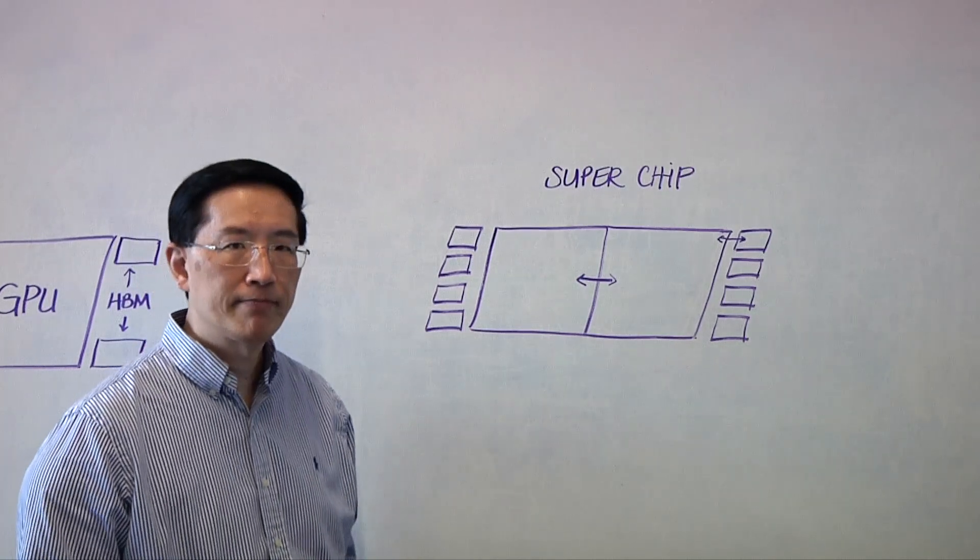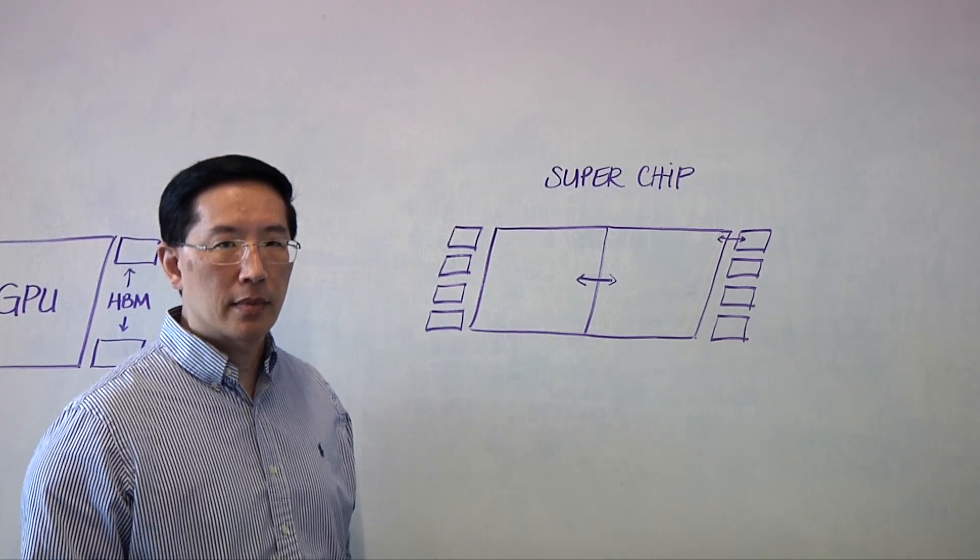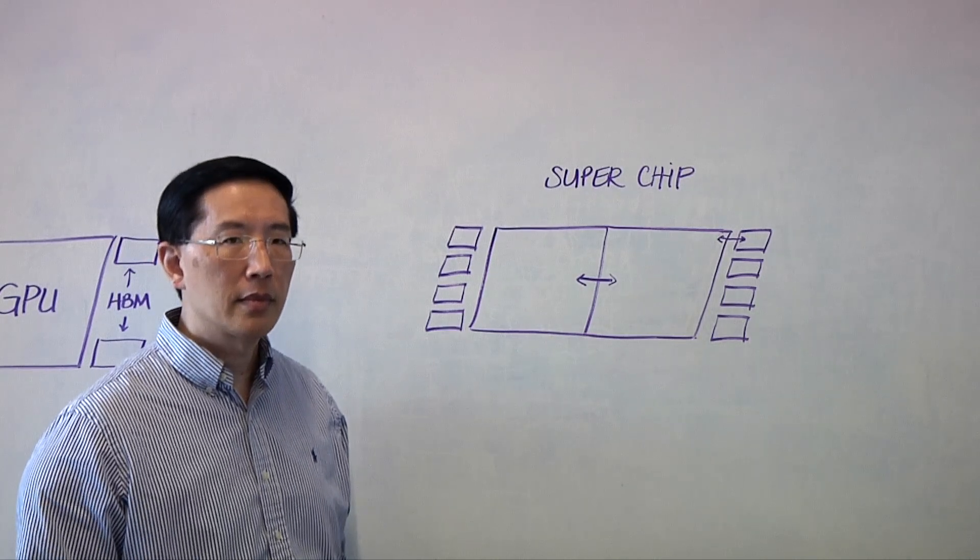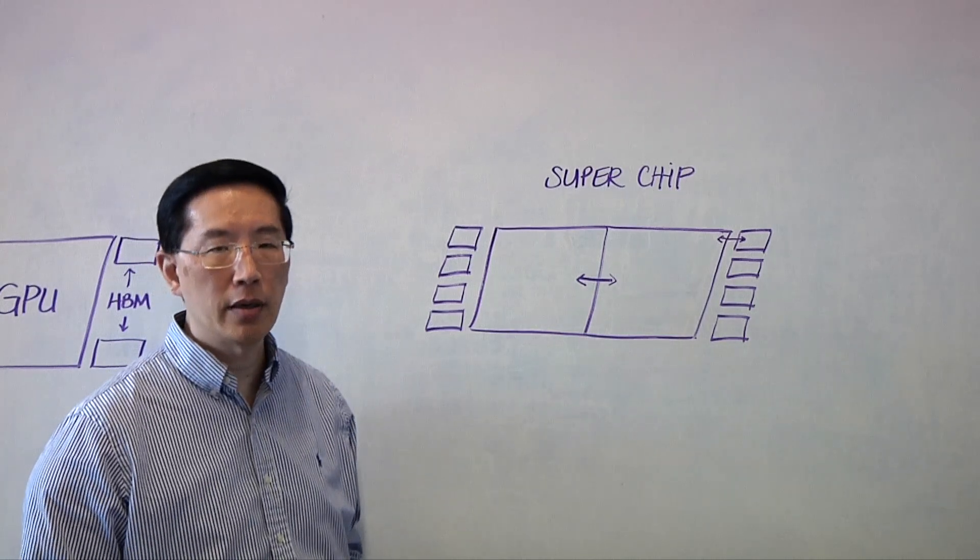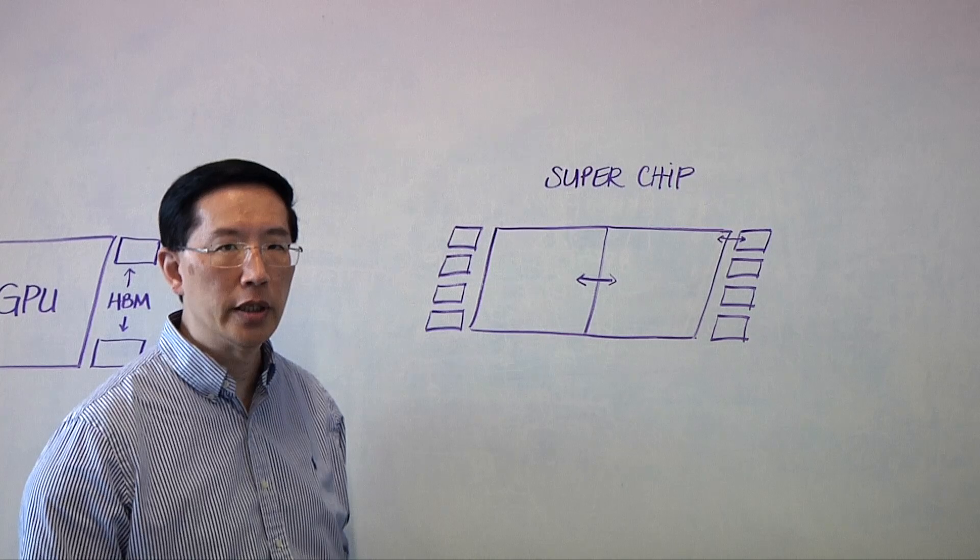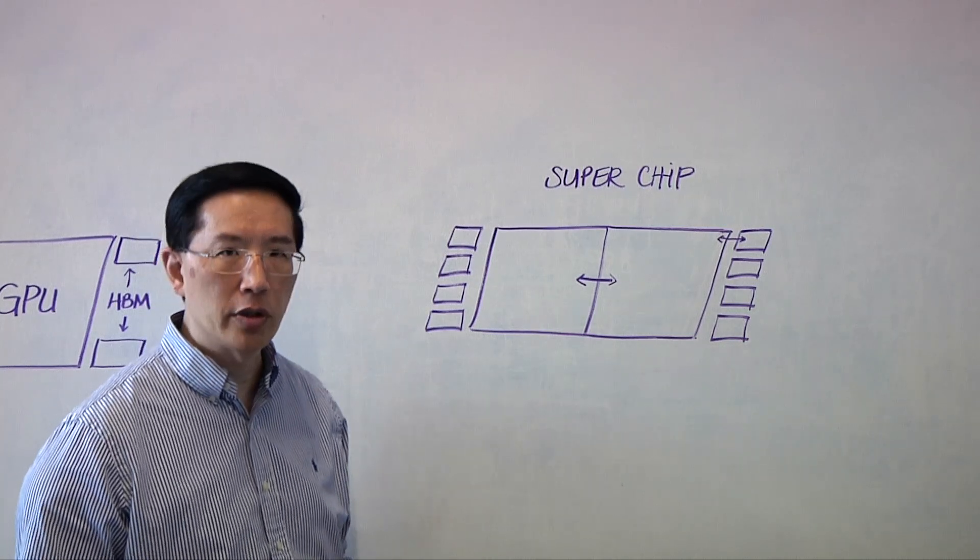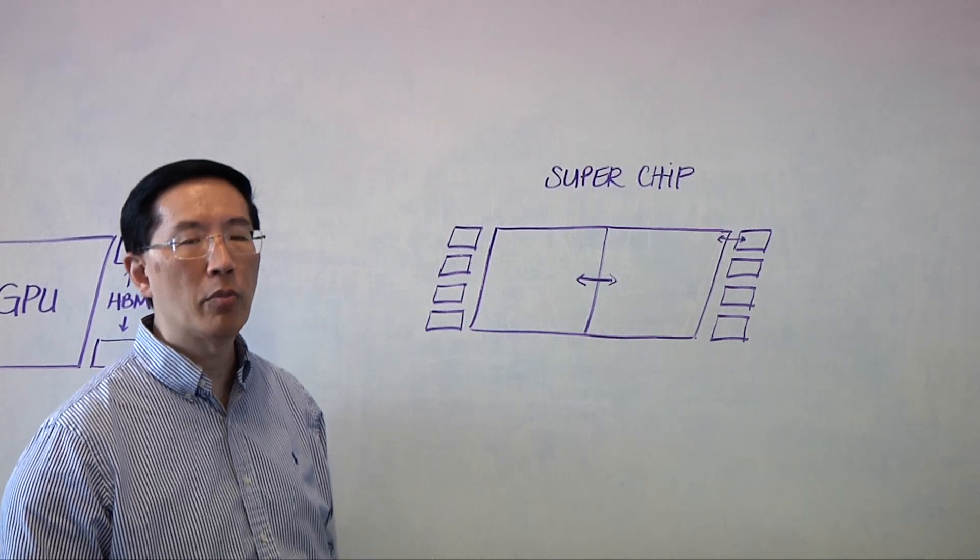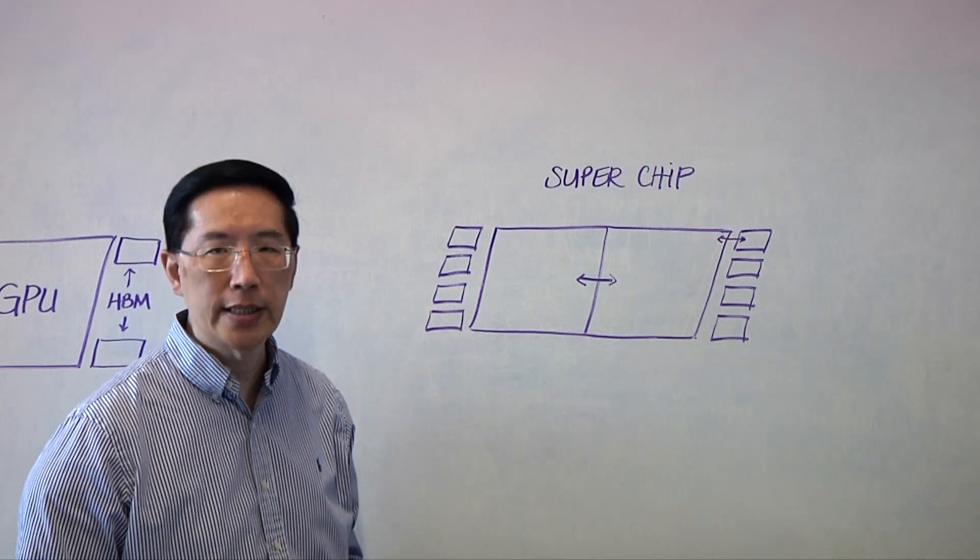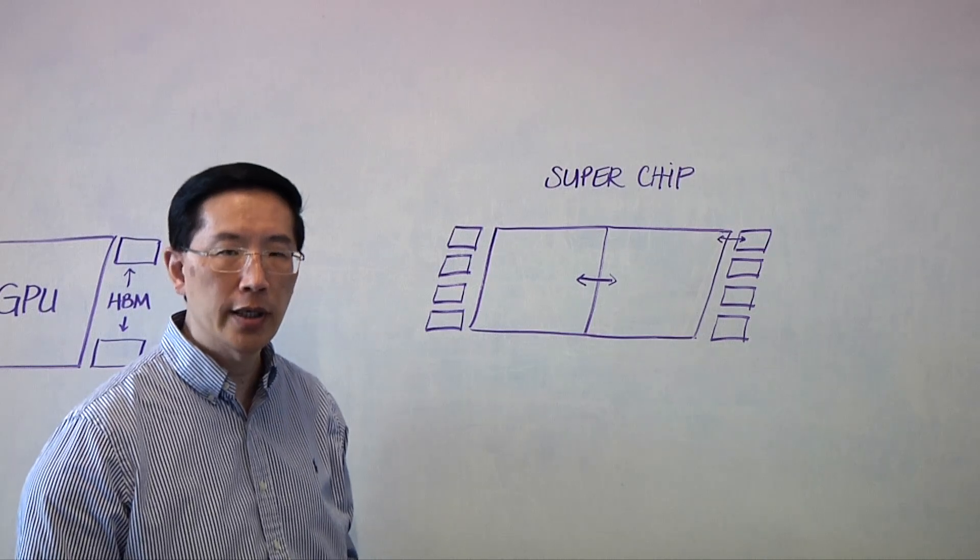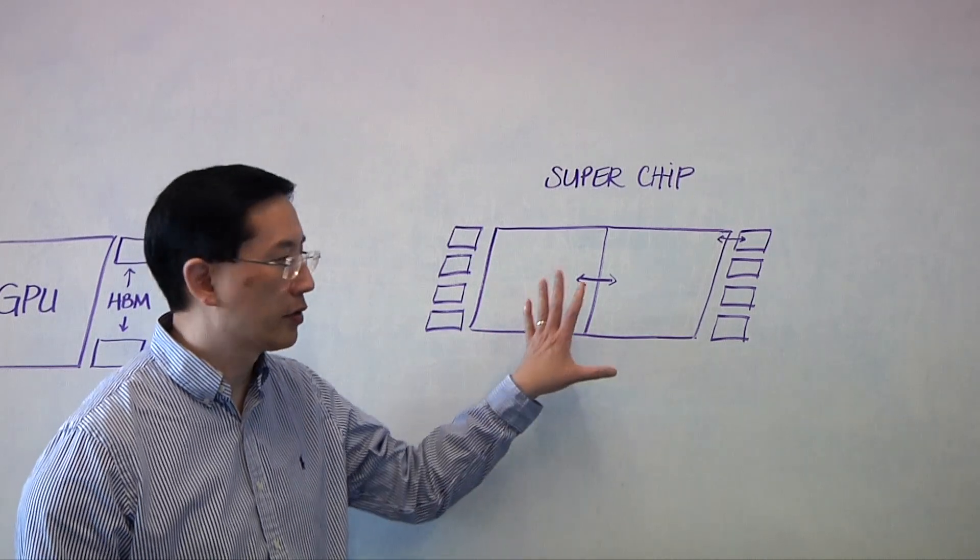People have always talked about superchips though. You think about going way back, here's the next Pentium that's coming out or whatever it happens to be. What's changed now? Really what's changed now is better packaging technology and better assembly technology. So now is the right kind of time. It's really a bit of an extension over what we've seen with HBM memory packaging. The experience that the industry has gained with HBM packaging and assembly has really helped the industry to understand how to do these kinds of superchip assemblies.